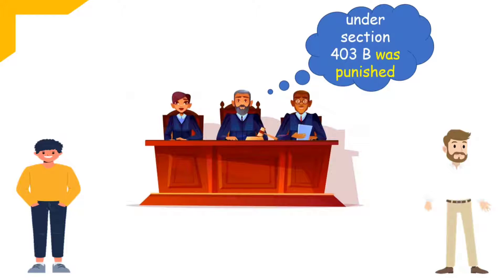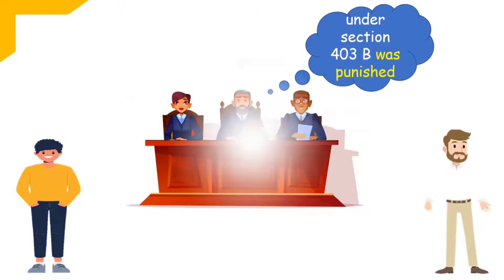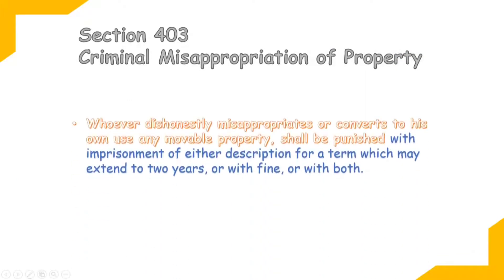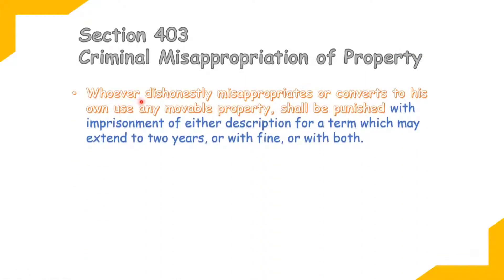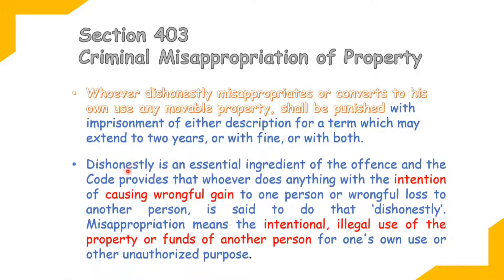Let's understand what section 403 deeply says. Whoever dishonestly misappropriates or converts to his own use any movable property shall be punished with imprisonment of either description — the maximum imprisonment for criminal misappropriation of property is two years — or with fine, or with both. Dishonesty means the wrong intention of causing wrongful gain to another person.